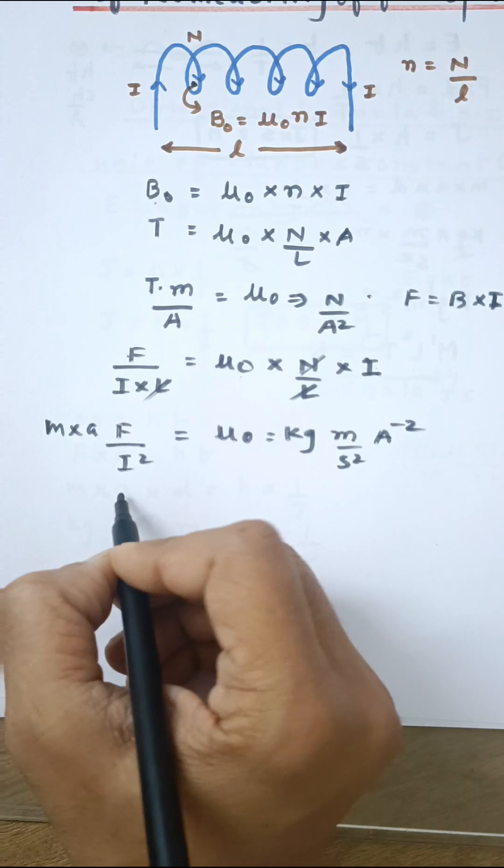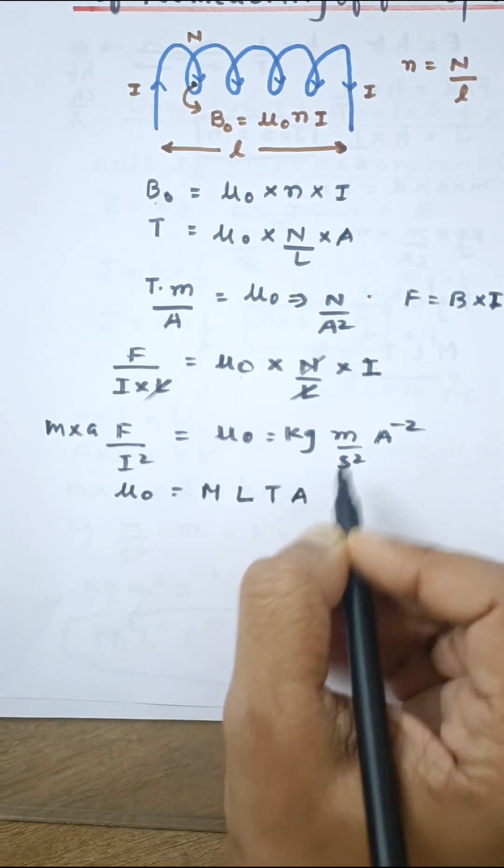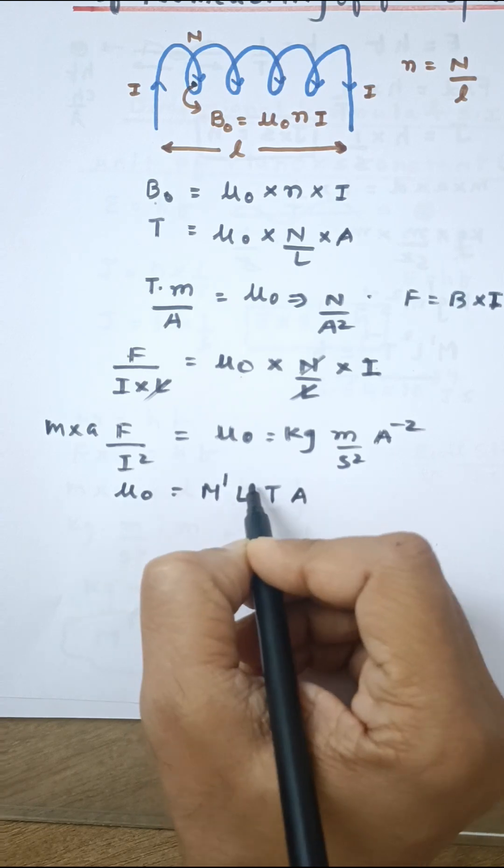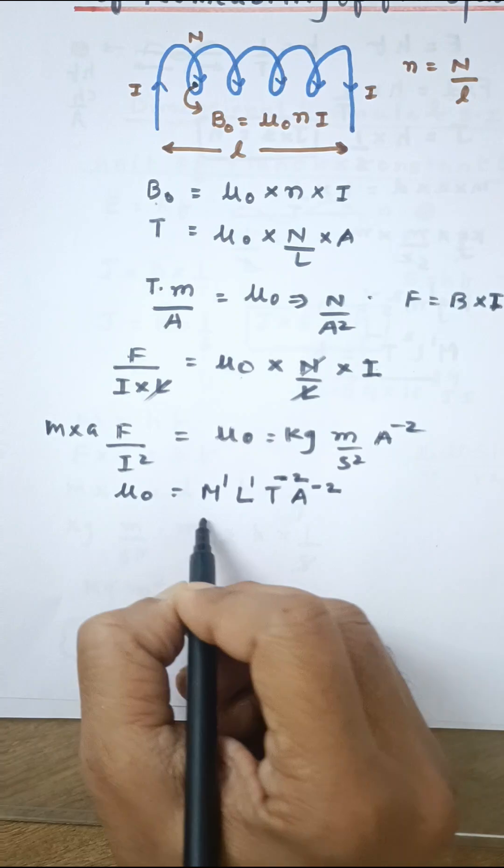So what am I going to write over here? μ0 can be written as M, then L, then T, and A. M raised to 1, mass raised to 1, length raised to 1, time raised to minus 2, and again current raised to minus 2.